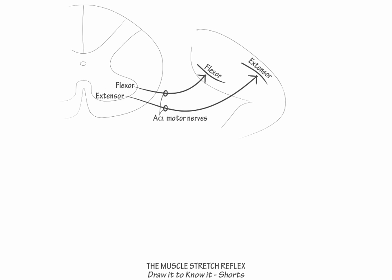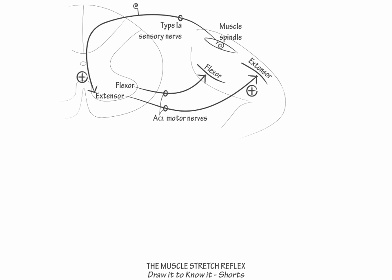Now draw a muscle spindle and show a type 1a sensory fiber projecting from it to the extensor motor neuron. Show that when the patellar tendon is activated, the muscle spindle sends an excitatory volley along the type 1a sensory afferent,